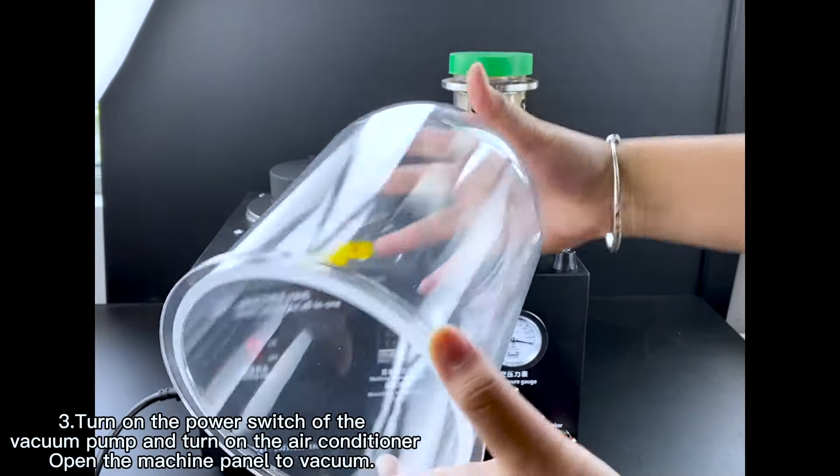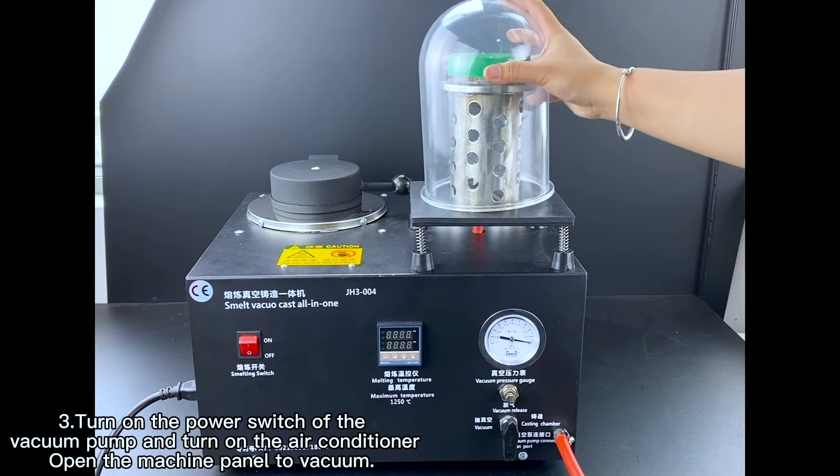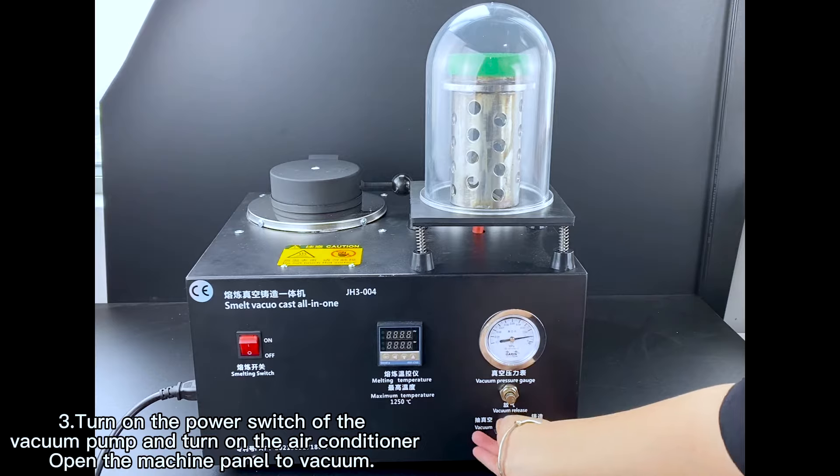Depending on the material and quantity. 3. Turn on the power switch of the vacuum pump and open the machine panel to vacuum.